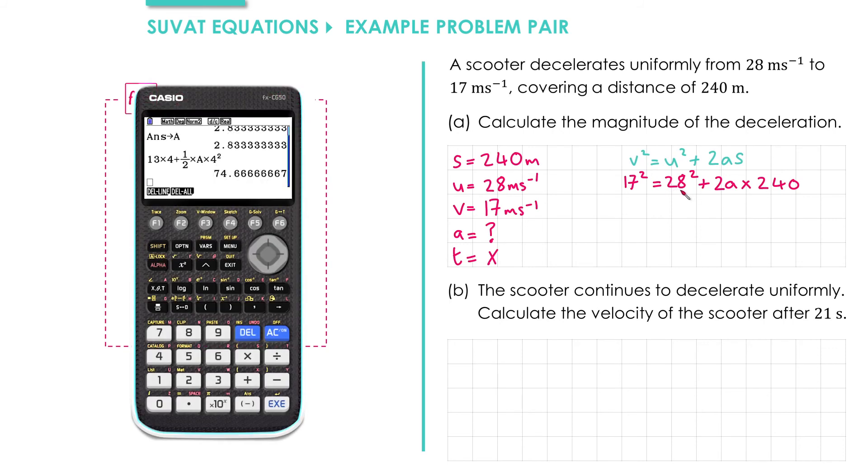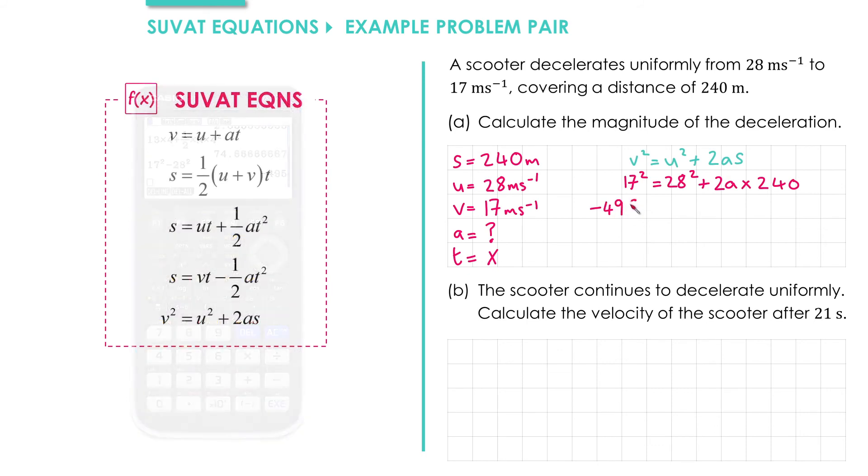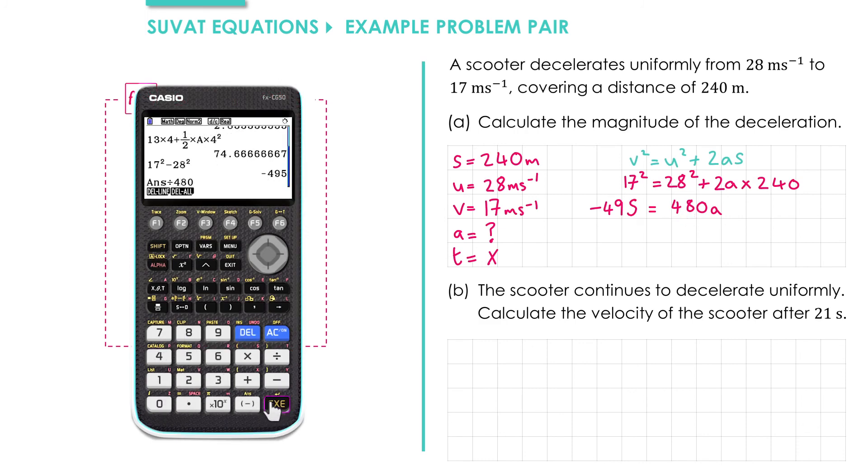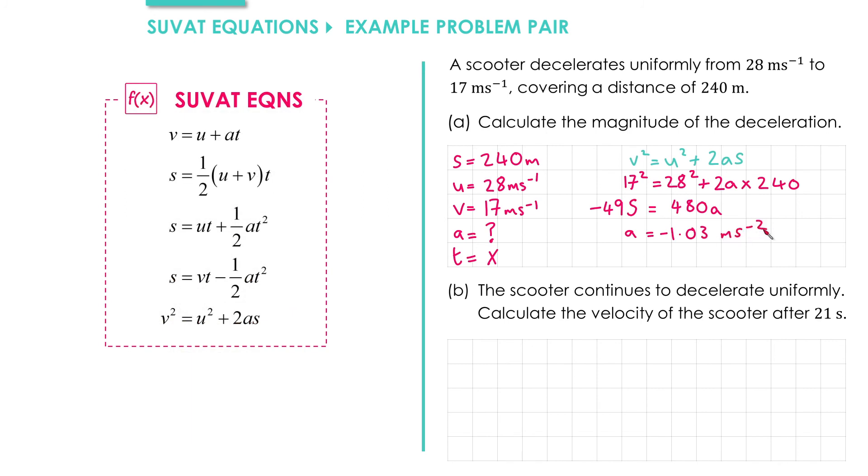We'll rearrange by subtracting 28 squared from both sides, giving us 17 squared minus 28 squared on this side. That gives us negative 495, and then we've got 2 times 240, which is 480. All we have to do now is divide through by 480, and that gives us negative 1.03 if we round to three significant figures. However, recall that the question is asking us for the magnitude of the deceleration. So the magnitude of the deceleration takes the absolute value of this, which is just 1.03 meters per second squared to three significant figures. When we're finding the magnitude of a quantity, we should never have a negative value for our answer.